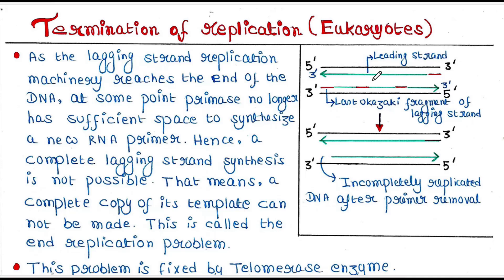Leading strand synthesis is very smooth and doesn't face any difficulties, but the lagging strand does. As the lagging strand replication machinery reaches the end of the DNA, at some point primase no longer has sufficient space to synthesize a new RNA primer. Hence a complete lagging strand synthesis is not possible — a complete copy of its template cannot be made. This is called the end replication problem, where a new primer cannot be fitted since the space is very limited at the end.